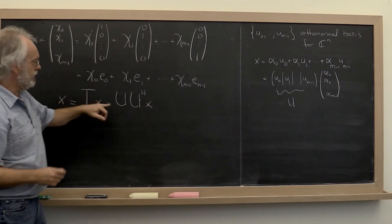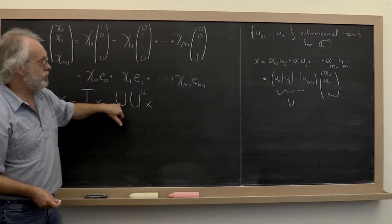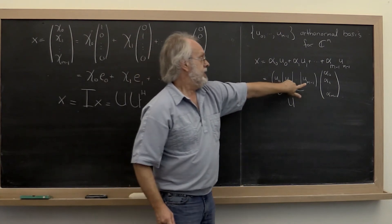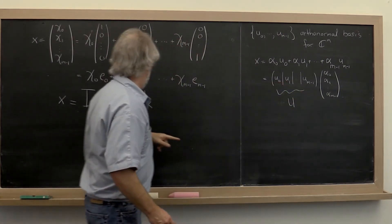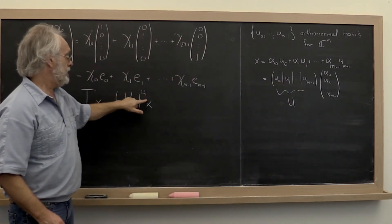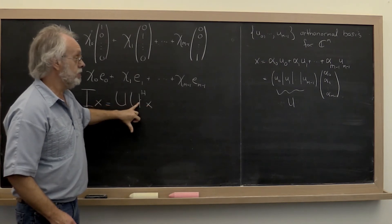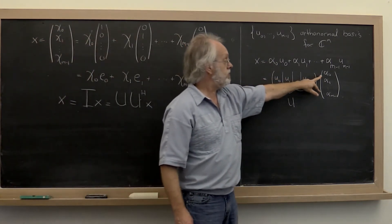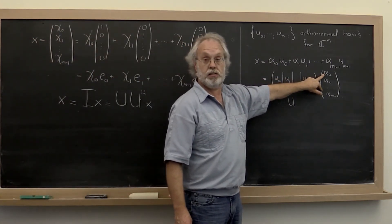Well we're starting to get close because this U here is what we have right here. And U Hermitian transpose times x is a vector which then should give us the coefficients that we desire.